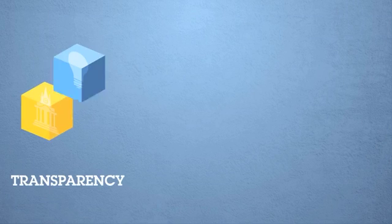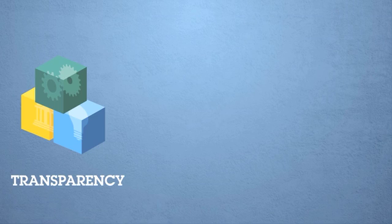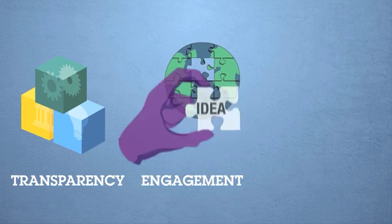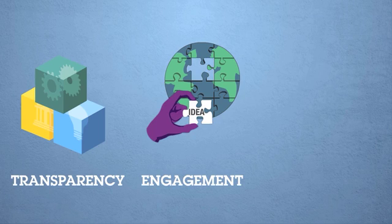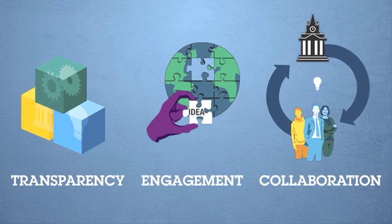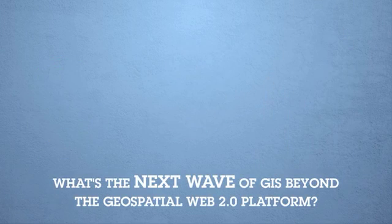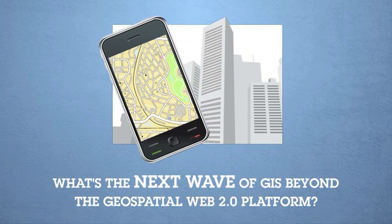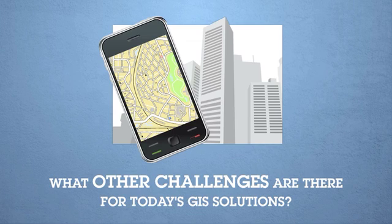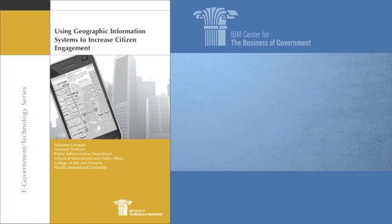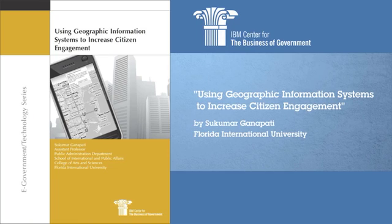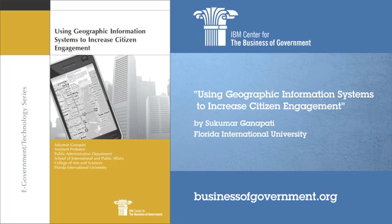These tremendous advancements in GIS over the years have helped citizens engage with a more transparent, collaborative government. Some governments are looking for new ideas, and citizens across the country are asking their leaders for more access to data and applications to help them get the most out of emerging technologies. What's the next wave of GIS beyond the geospatial web 2.0 platform, and what other challenges are there for today's GIS solutions? To learn more, we invite you to read the report "Using Geographic Information Systems to Increase Citizen Engagement," published by the IBM Center for the Business of Government. For more information, please visit the center's website at businessofgovernment.org.